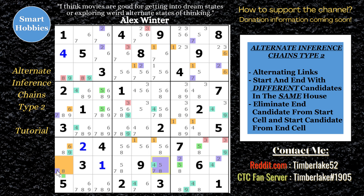So what that means is: is this a 7? If that's a 7, this can't be a 7. But if it's not a 7, this cell's a 4 — so it still can't be a 7. Also looking at the 4: if this is a 4, there'd be no 4 right here. In my first two examples you weren't able to eliminate one of the candidates from the start cell — that happens. You can eliminate one candidate or both: one from the start and one from the end. So you can eliminate that 7, and that helps move on with the rest of the puzzle.